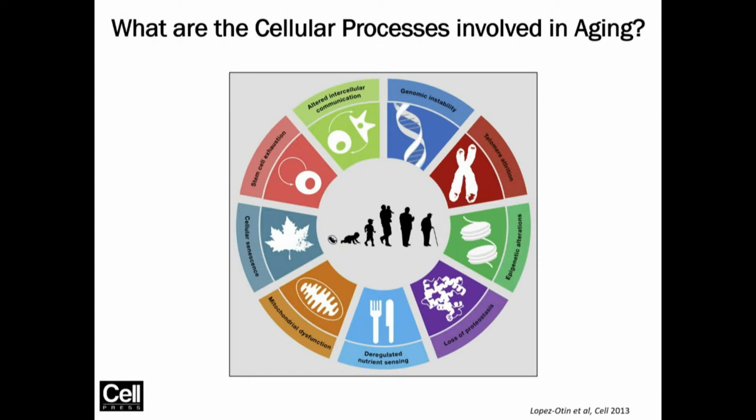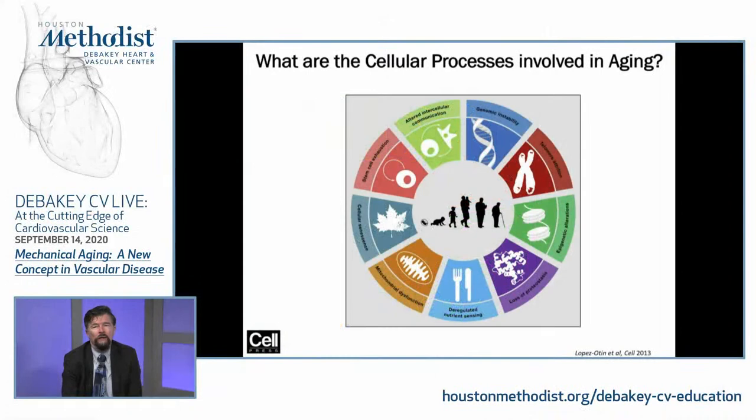We have cellular senescence, where cells begin to lose their form and function. Stem cell exhaustion occurs — every tissue has resident stem cells that help with repair, and those stem cells are lost over time. There's altered intercellular signaling, genomic instability and mutations, and telomere erosion. Epigenetic alterations are also important; if you lose epigenetic marks or gain new ones that shouldn't be there, it alters the gene expression of your cell. There's also loss of proteostasis — the loss of the ability to get rid of misfolded proteins, which can accumulate and cause problems.